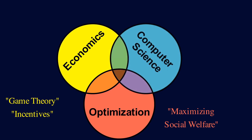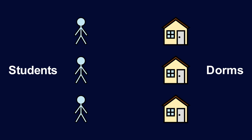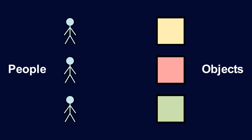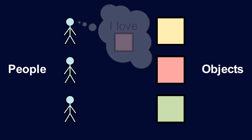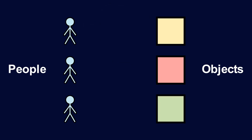And there's a computer science component that deals with designing algorithms and analyzing runtime. This is called the house allocation problem, which is part of a field called algorithmic game theory. This field is motivated by a lot of real-world problems. This model can generally be about people having preferences over a bunch of objects. The main requirement is that only one side has preferences over the other side.